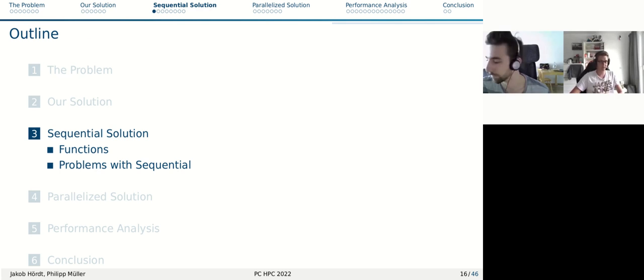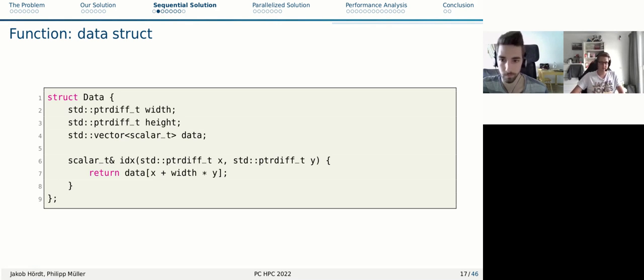Wonderful. Can I get the presenter? Our sequential solution. I'm going to talk you through some of our functions. First, it's our data struct, and we have a width and a height of our field, and it's very important to know that we are using a vector to store our data and not a two-dimensional field. Of course, we need an index function to find out which place in the vector we have when using a certain x and y.